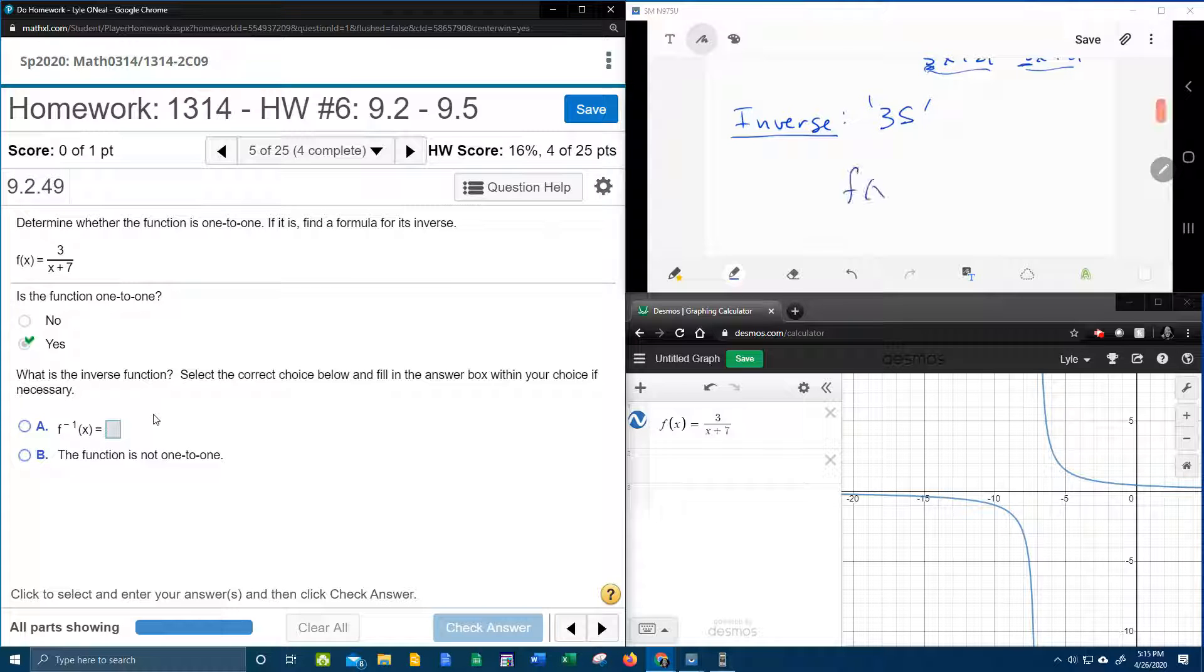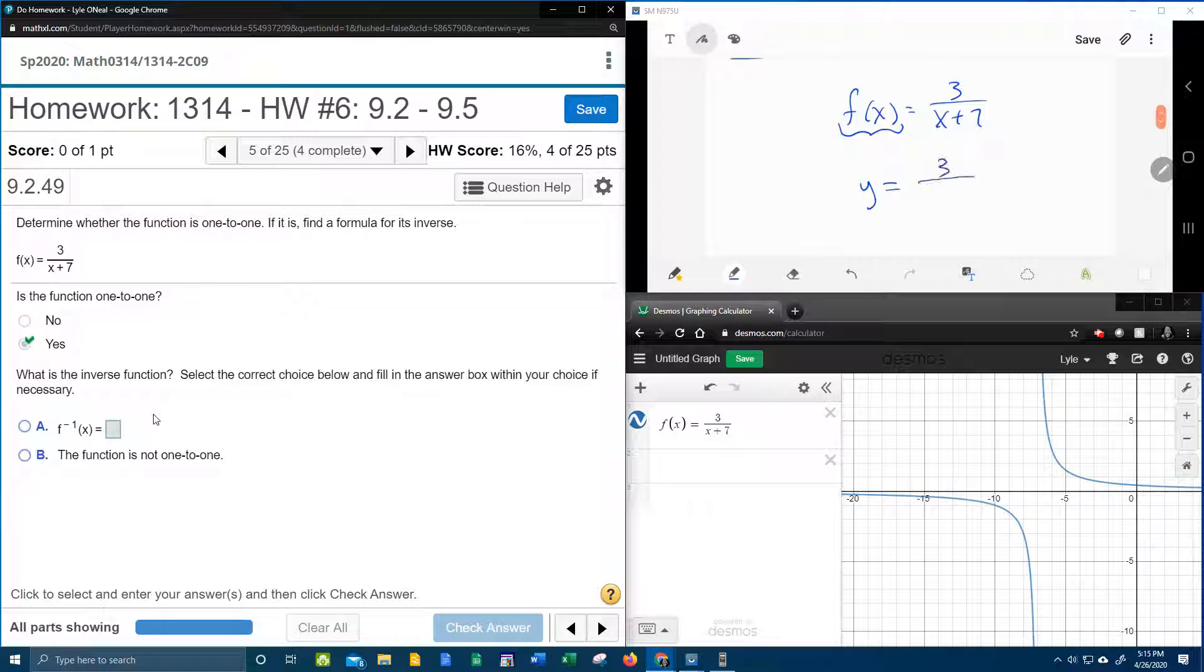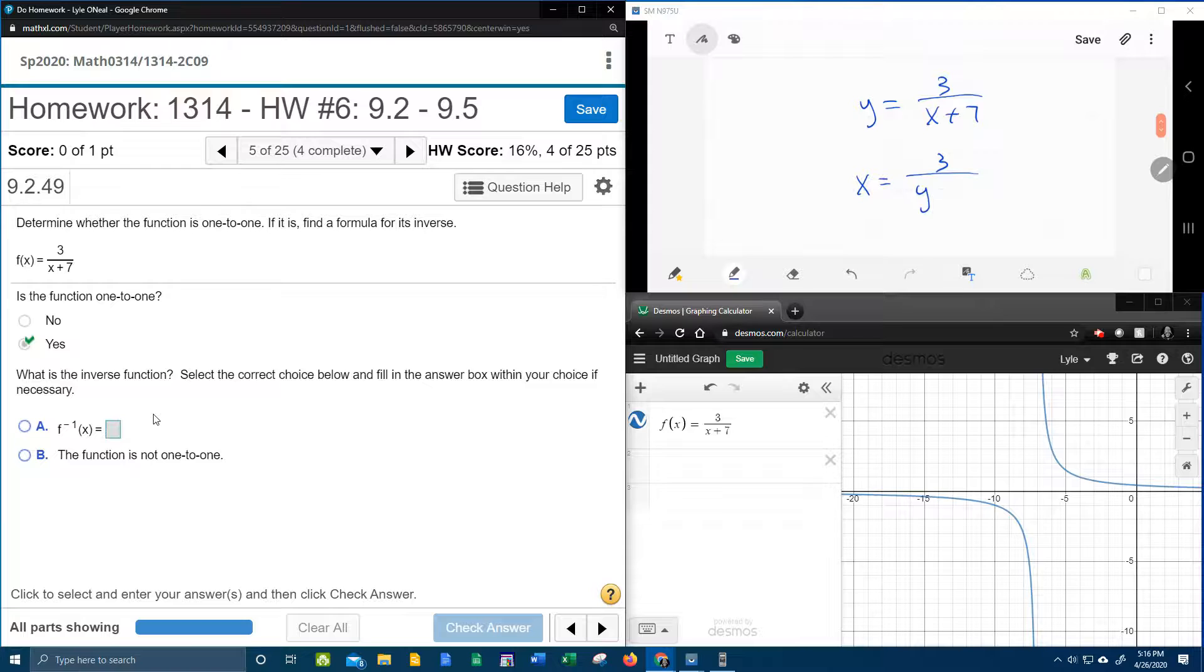If I copy down the original function, the first S says substitute—that means we want to replace f of x with y. And then the second S is switch—we want to switch x and y. And then the third S is solve—we want to solve for y.